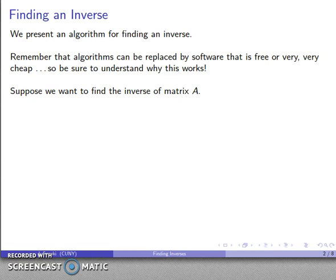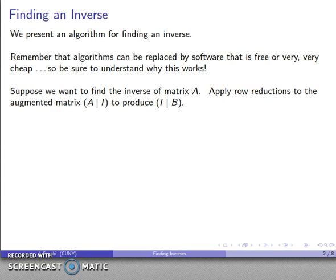So here's the algorithm. Suppose I want to find the inverse of some matrix A. I'm going to augment this matrix A with the identity matrix of the appropriate size, and I'm going to apply row reductions to produce the identity matrix as the first part of the augmented matrix and then something else as the other part. If I can do this, and there's no guarantee I can always do this, but if it's possible to do this, then this matrix over here is going to be the inverse of matrix A.